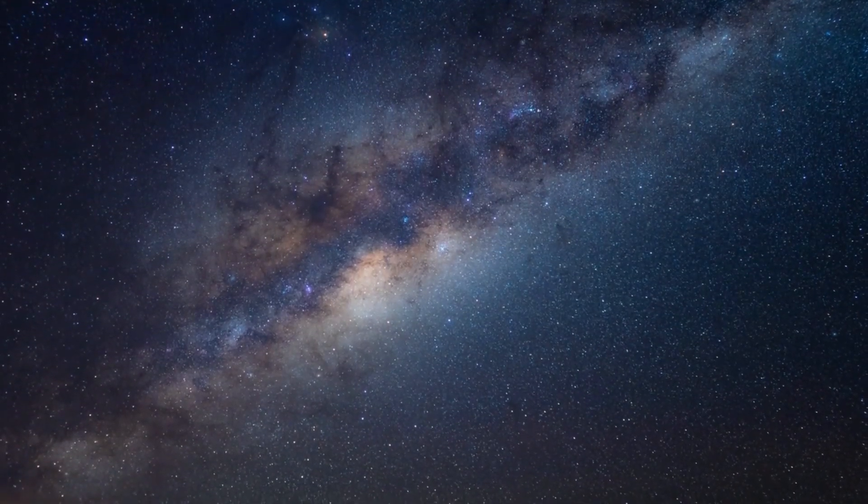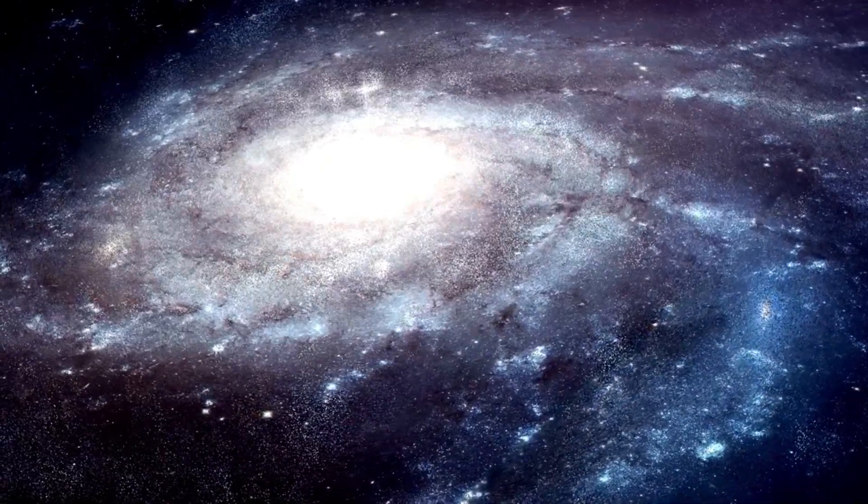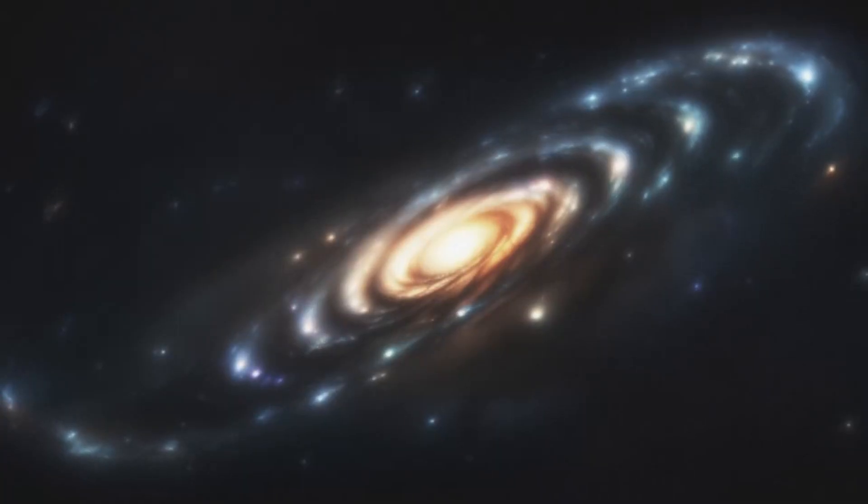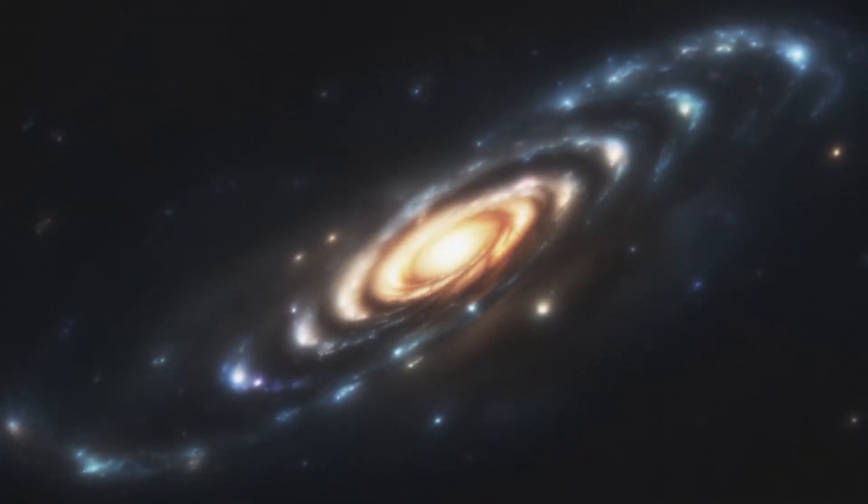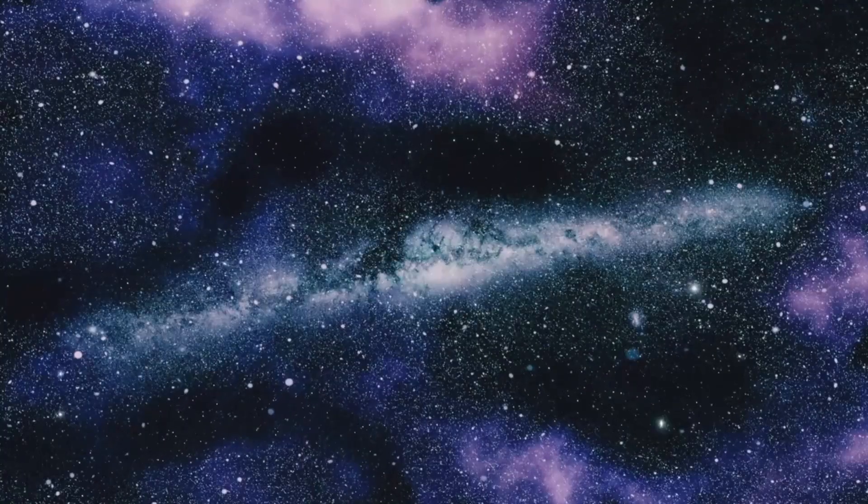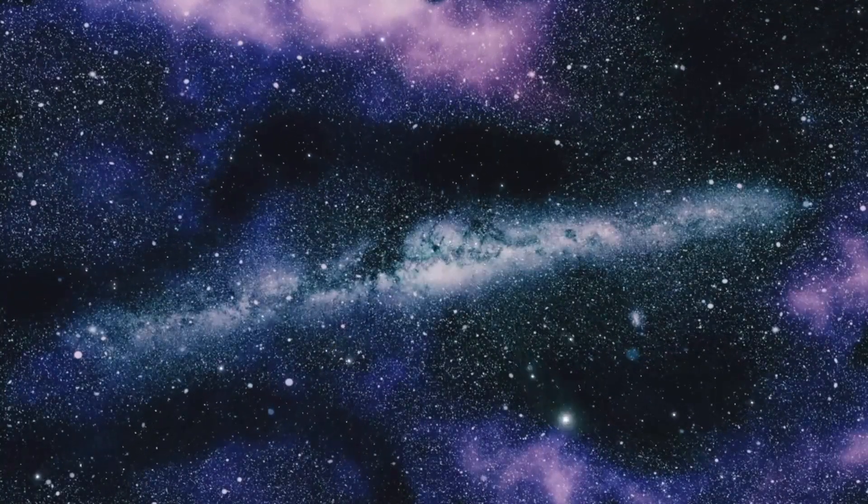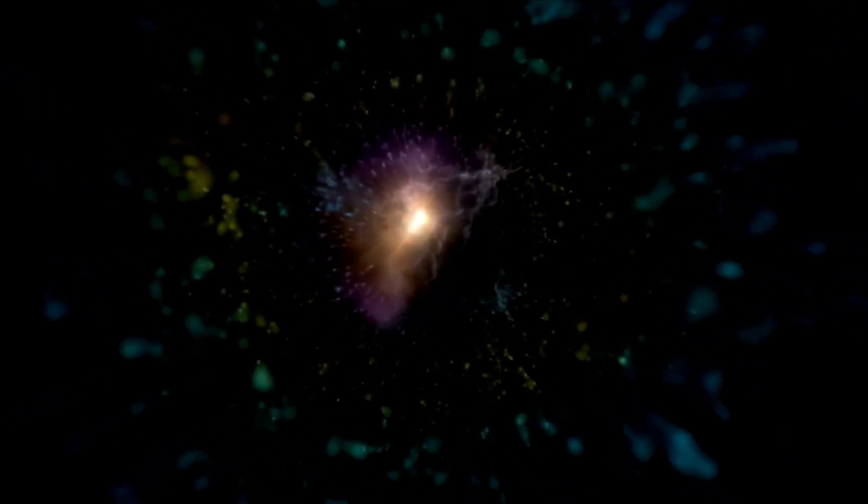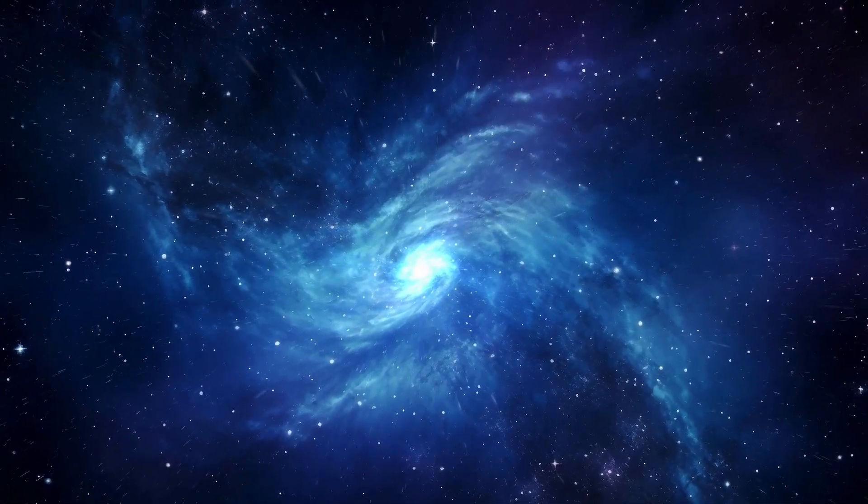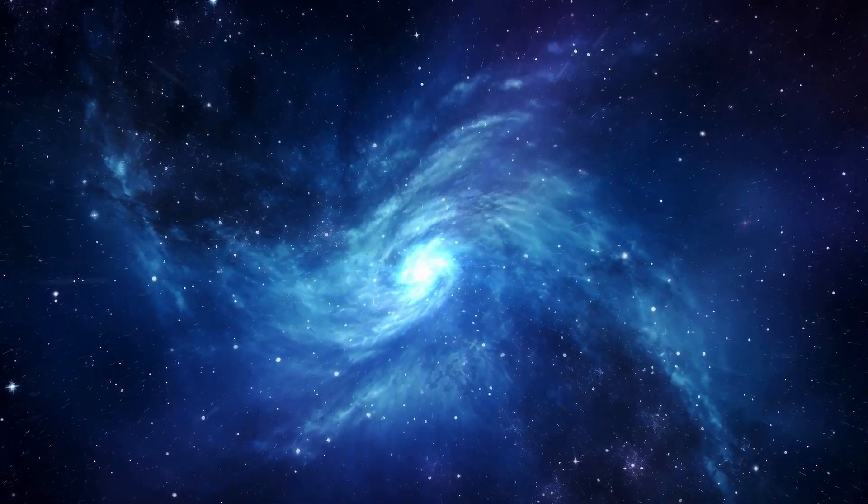When the JWST began sending back its initial data, researchers were excited. As they sifted through the information that came in for the Uncover program, three small objects with a faint red flicker caught their attention. They immediately believed it was a nearby massive black hole. However, when they analyzed the data using gravitational lensing, they discovered something much more fascinating. The discovery of similar phenomena in other early universe supermassive black holes has provided new insights into the progression of both the black hole and its host galaxy. But one thing is clear: the James Webb Space Telescope is constantly finding new, strange objects.